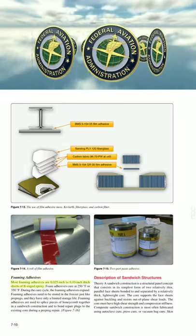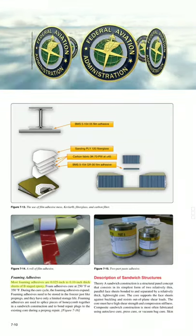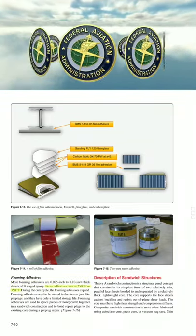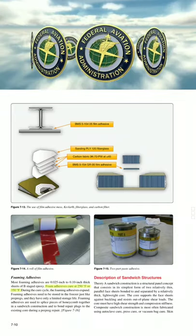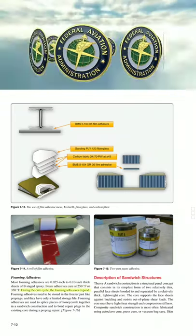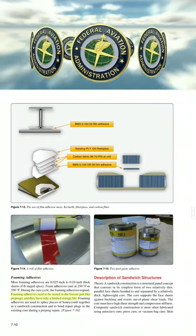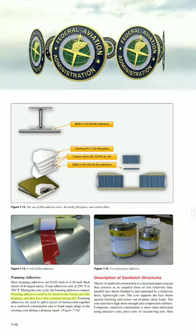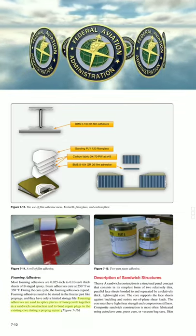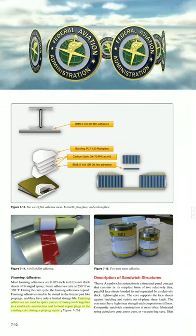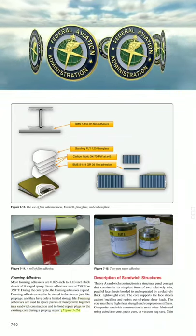Foaming adhesives. Most foaming adhesives are 0.025- to 0.10-inch thick sheets of D-staged epoxy. Foam adhesives cure at 250°F or 350°F; during the cure cycle, the foaming adhesive expands. Foaming adhesives must be stored in the freezer like prepregs and have only a limited storage life. Foaming adhesives are used to splice pieces of honeycomb together in sandwich construction and to bond repair plugs to existing core during a prepreg repair.